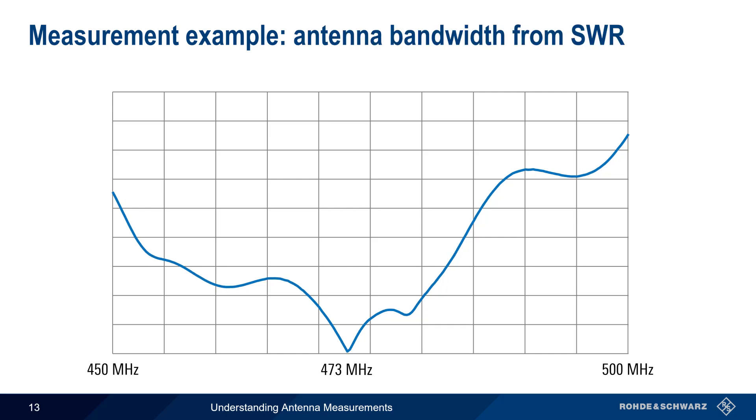As mentioned earlier, we can also use this graph to determine the bandwidth or usable frequency range of an antenna. Here, we're defining this as the frequency range over which SWR is less than or equal to 2, although 1.5 is also used sometimes as the limit. From the graph, we see that SWR is less than 2 between 468 MHz and 481 MHz. Therefore, we can specify this antenna as having a usable frequency range, or bandwidth, of approximately 13 MHz.